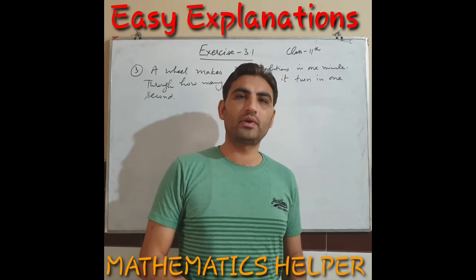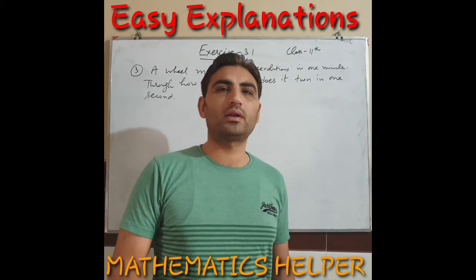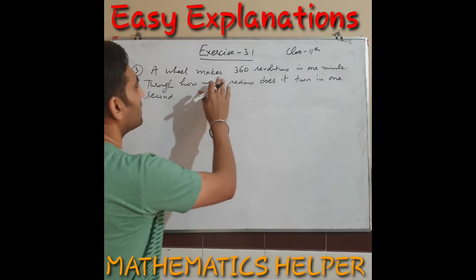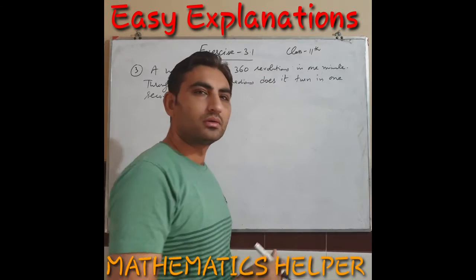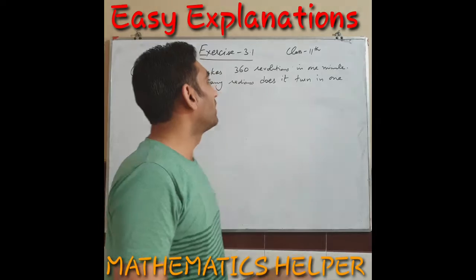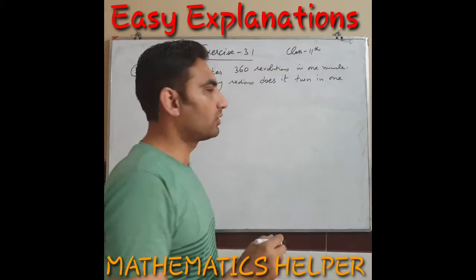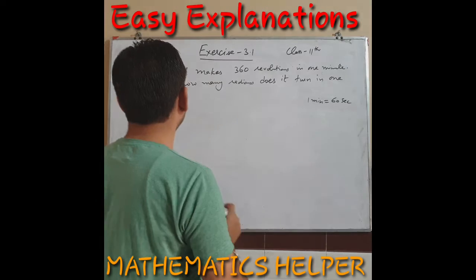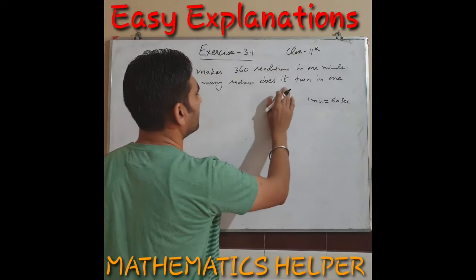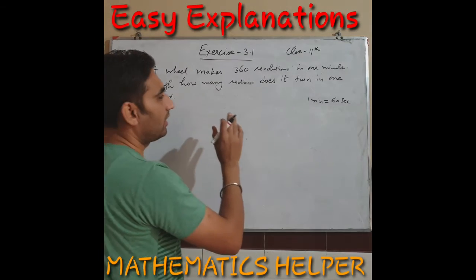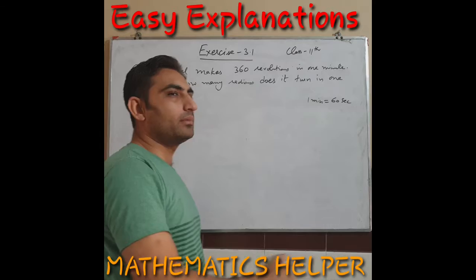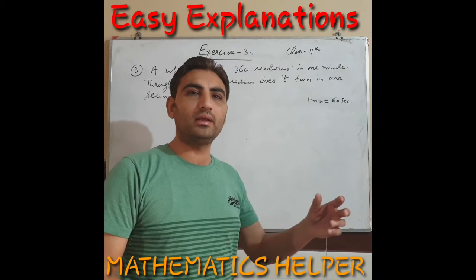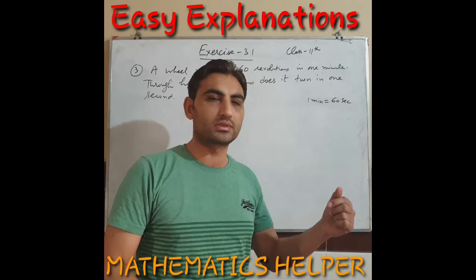In this video we will discuss Exercise 3.1 Class 11, question number three onwards. In question three, a wheel makes 360 revolutions in one minute. We have to find through how many radians it turns in one second. First we'll find how many times it rotates in one second, then find the angle in radians covered in that number of revolutions.